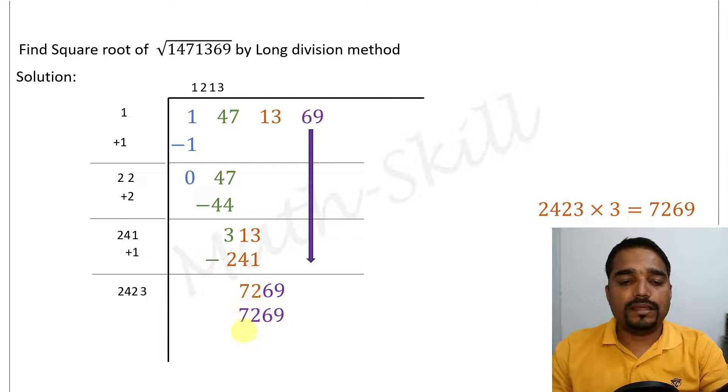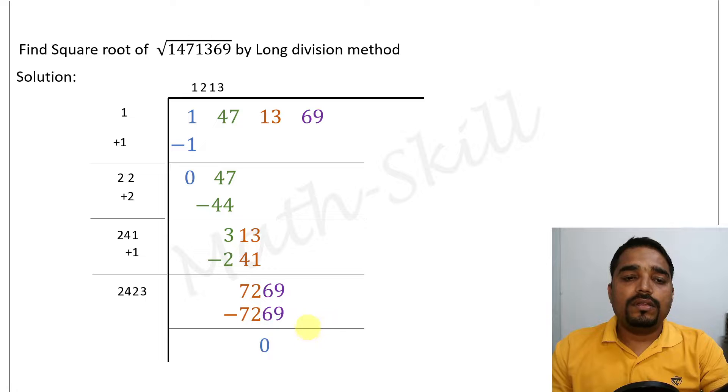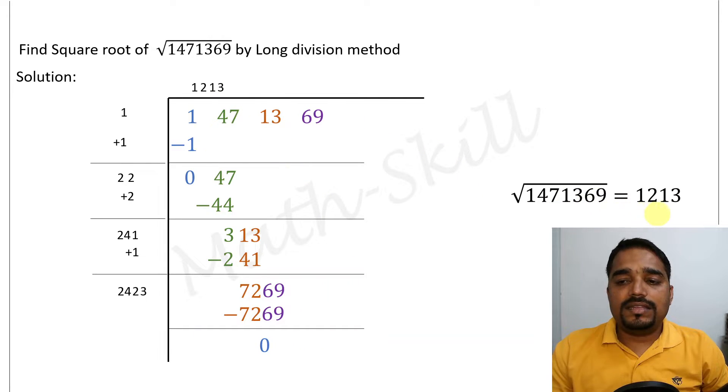Now let's take this number and subtract here. 7269 minus 7269 would be equal to 0. Since we got the remainder as 0, therefore the square root of 1471369 is equal to 1213.